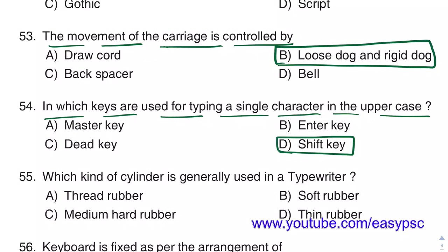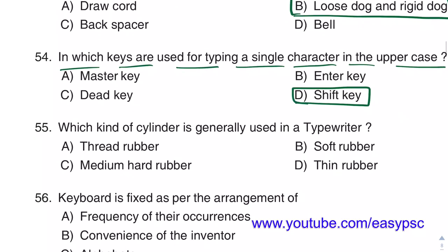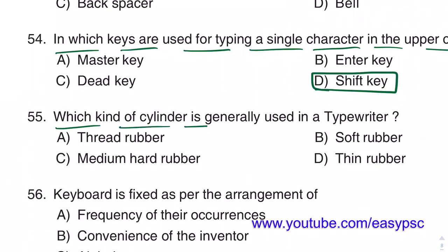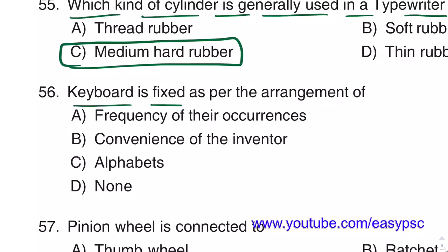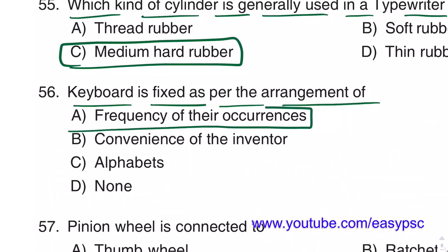To type a single character in uppercase in a typewriter, the Shift key is used. The kind of cylinder generally used in a typewriter is Medium Hard Rubber. The keyboard is fixed as per the arrangement of the frequency of their occurrence.